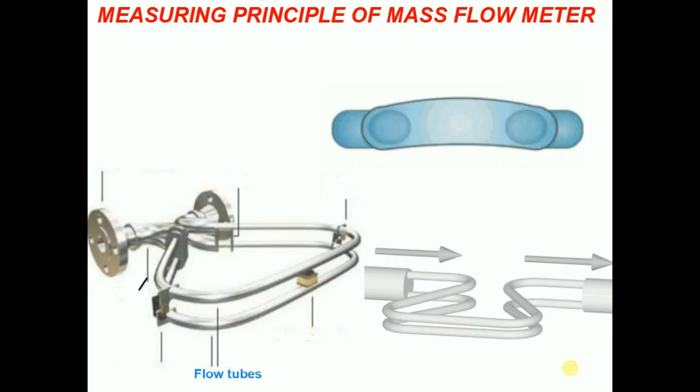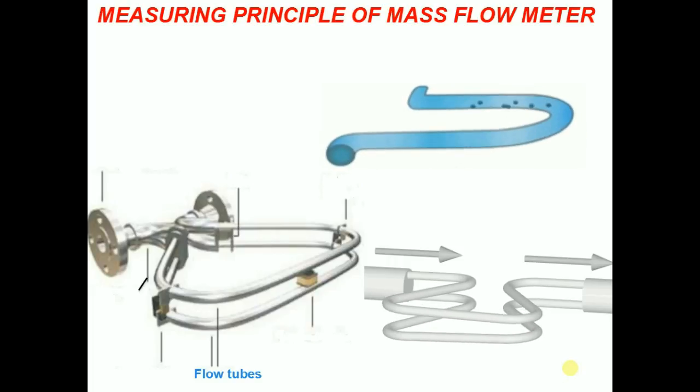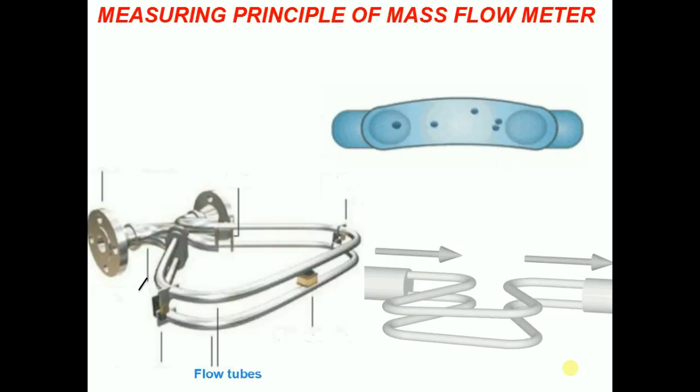The tube twist or angle of deflection from the vibration plane is measured and converted into a mass flow measurement.